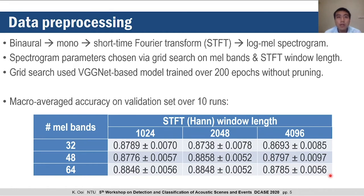The results are in the table on this slide, and we used a 50% overlap between successive windows for the STFT. The model performed best when a mel filter bank with 48 filters was used together with a Hann window of length 2048, as highlighted in red, with a mean macro-averaged accuracy of 88.58% on the validation set over 10 runs. Hence, we used these spectrogram parameters for submission.